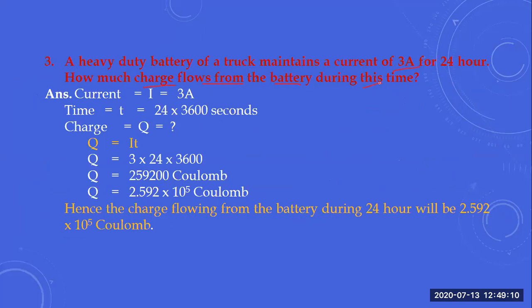The current maintained is 3 amperes and the time is 24 hours. We convert this time into seconds by multiplying by 3600 seconds. You are asked to calculate the charge. This is an important question: if the time through which the charge passes and the current maintained are both given, you can calculate the number of charges using the definition of current: I = Q / T.